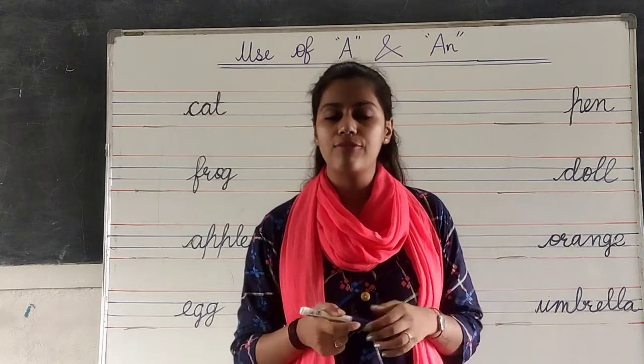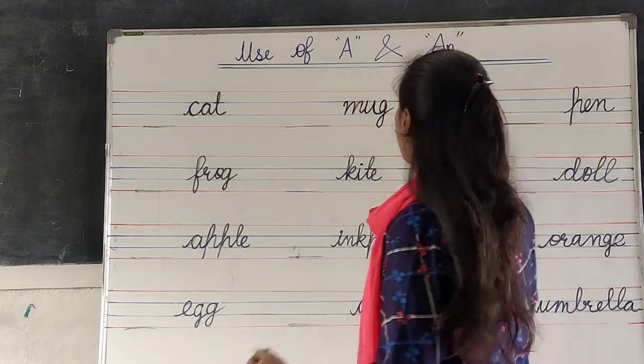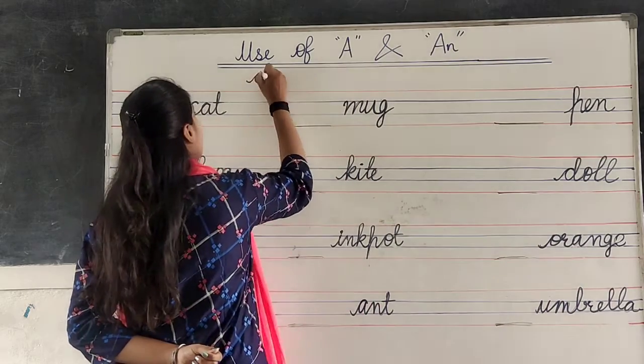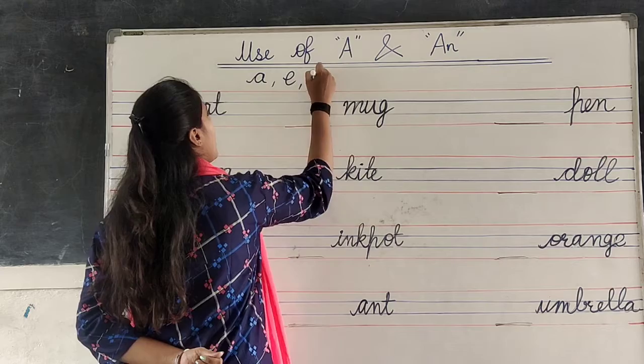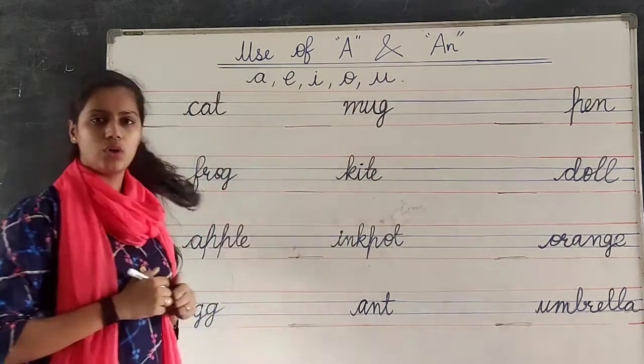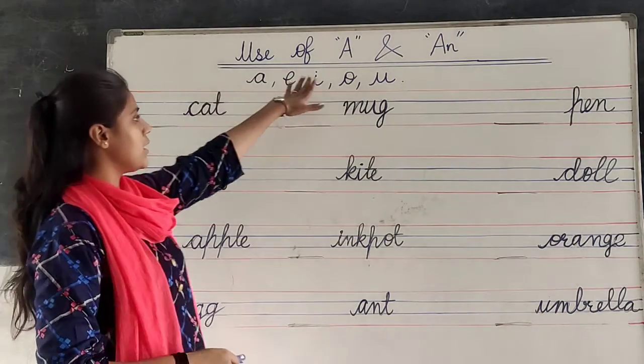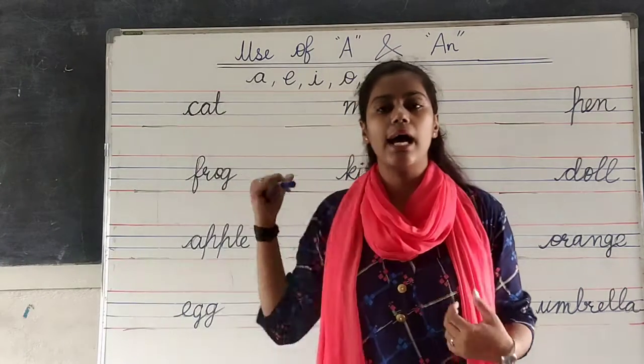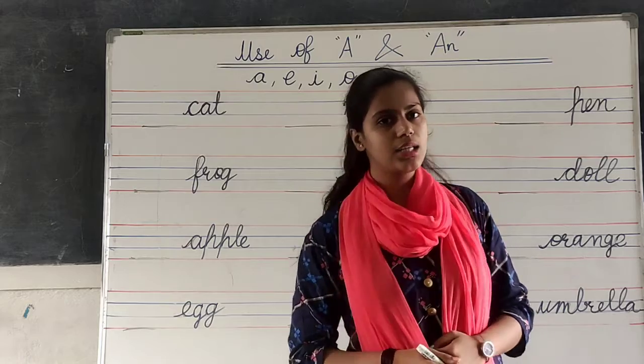So tell me, what are the 5 letters? A, E, I, O and U. Okay? These are the 5 letters. They are vowels. Right?